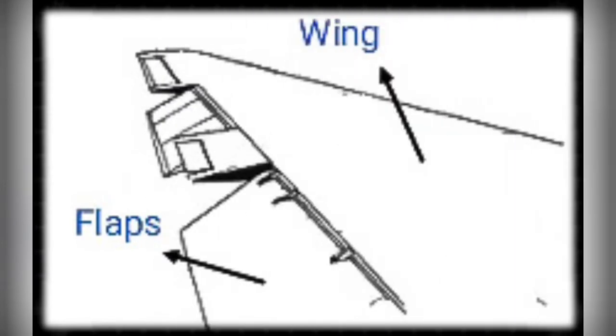Flaps are located at the trailing edge of the wing, adjacent to the fuselage. They provide high lift at low speeds. These are lowered downwards to increase the camber, which provides lift.